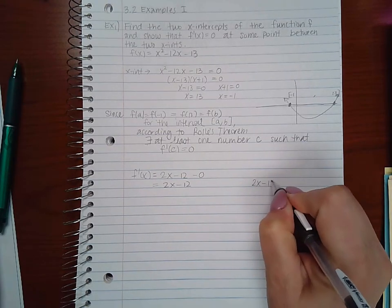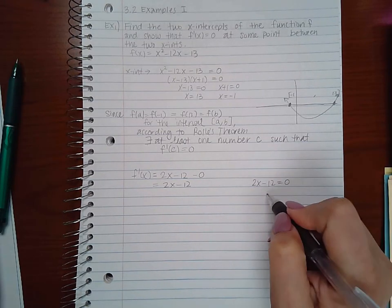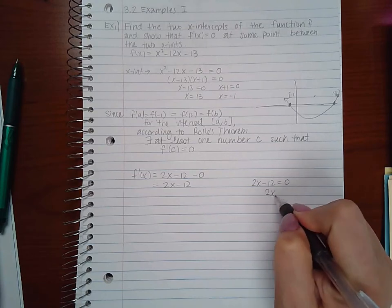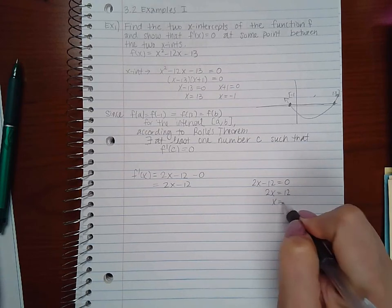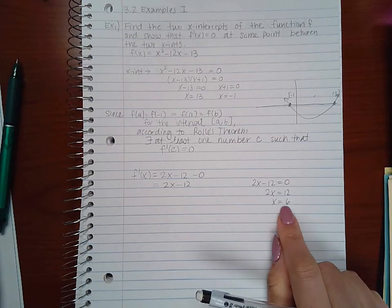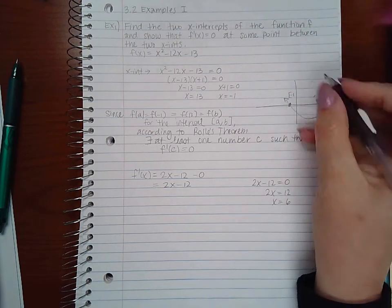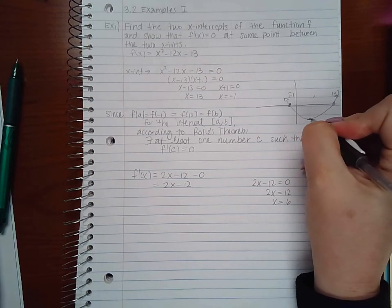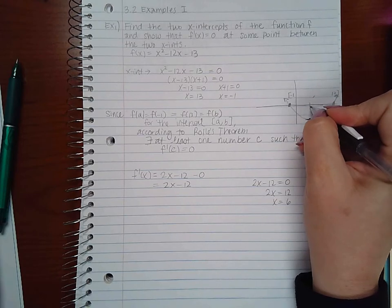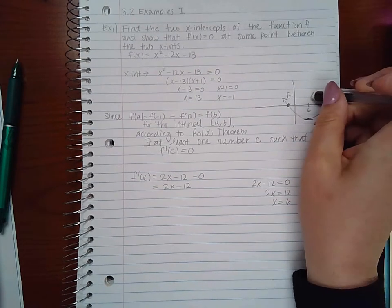And if I set that function equal to 0, I have to add 12 on both sides, I have to divide by 2 on both sides, and I get that the x value here is 6. So this has got a derivative or a slope equal to 0 when x is equal to 6.